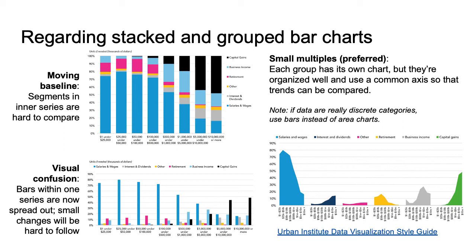It is inappropriate to use a chart type that is designed for continuous data, like a line chart, which uses a line to indicate continuity from one point to the next, for categorical data.